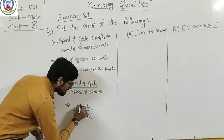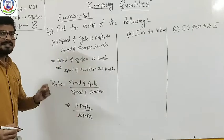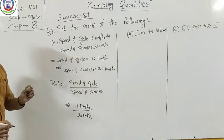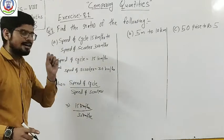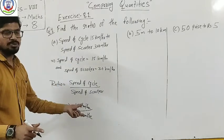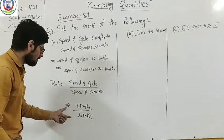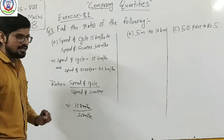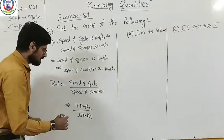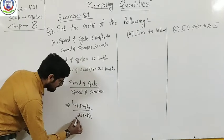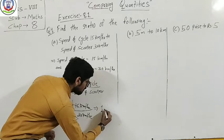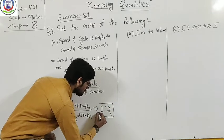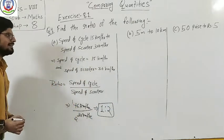Km per hour cancels with km per hour—that's why ratio has no units, as I mentioned at the start. After canceling, your ratio is 1 is to 2, and this is your answer.